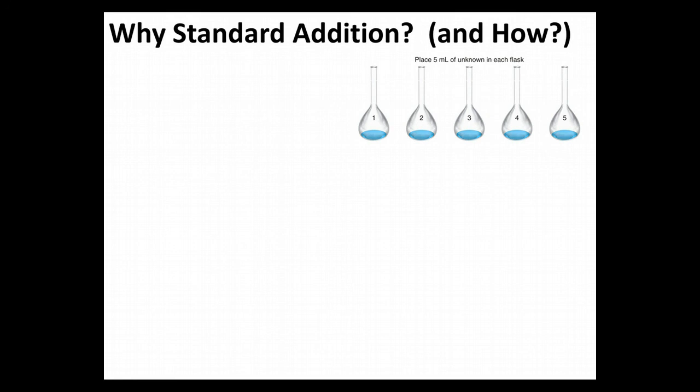Now, what happens when you've got a complicated enough sample that it becomes challenging to blank it and to come up with a calibration curve that's separate and make everything artificially?